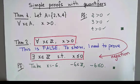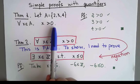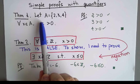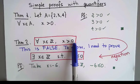So the summary is, to prove something like this is true, I need to verify this is true for all the elements, and to prove something like this is false, I need to find one element for which this is false.